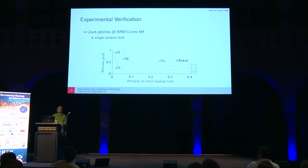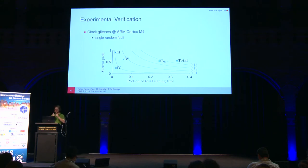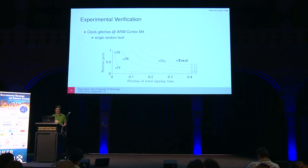We did simulations but also experimental verifications using clock glitches on an ARM Cortex-M4, where a single random fault is sufficient for each scenario. We benchmarked the runtime to see how much of the signing time is susceptible to a fault. Faulting the hash directly has high success probability but is a small target window. Expansion of the public key takes quite a lot of time and appears to be a good target; for that scenario we got an average success probability of about 0.6.